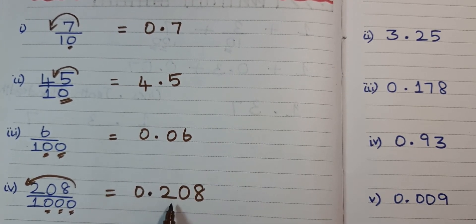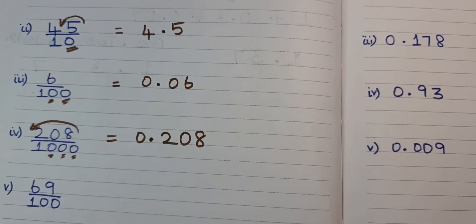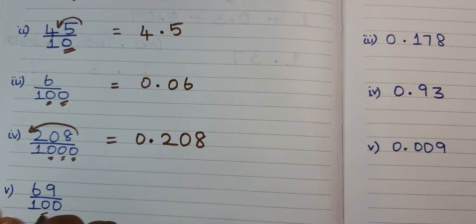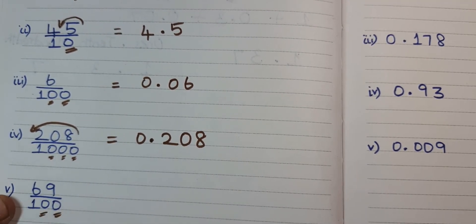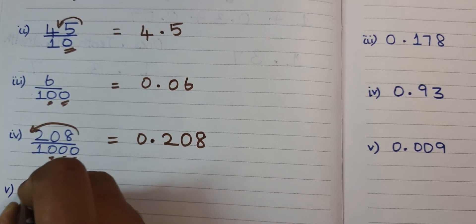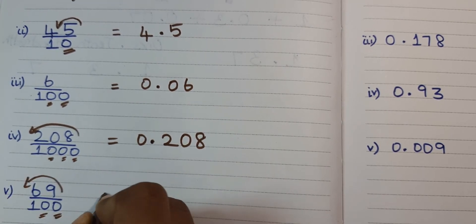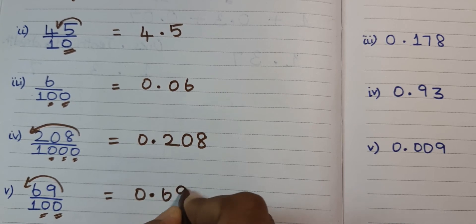Fifth problem: 69 divided by 100. How many zeros? Two zeros. 69 is a two-digit number, so I have to place the decimal point before two digits. The answer is 0.69.